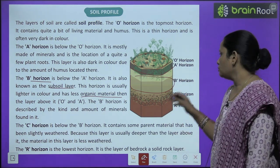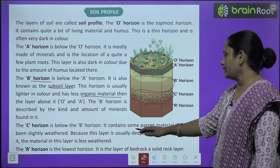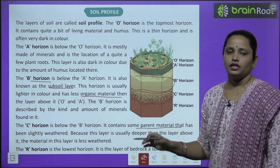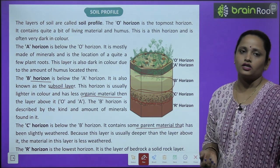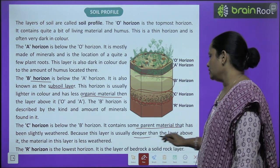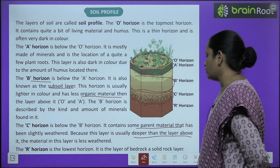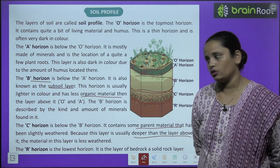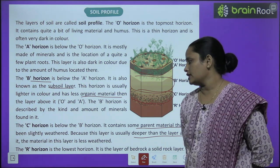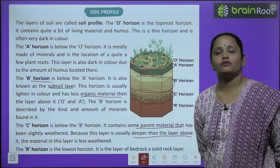The C horizon is below the B horizon. It contains a parent material that has been slightly weathered. Because this layer is usually deeper than the layers above it, the minerals in this layer are less weathered.